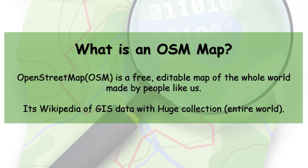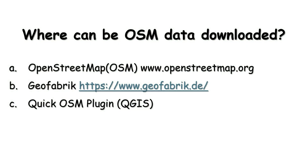OpenStreetMap is also referred to as the Wikipedia of GIS data, with a huge collection for the entire world. The data format available for download is vector — you can download it as a shapefile or GeoJSON. I have listed a few websites and a plugin for downloading OSM data: first is OpenStreetMap, second is Geofabric, and next is the QuickOSM plugin in QGIS. I'll be sharing the links in the description.